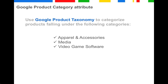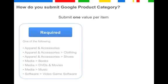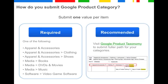The Google product category attribute is a completely new attribute. It contains the category of the product according to Google's product taxonomy. You have to use this attribute to categorize products falling under the categories apparel and accessories, media, and software. You submit only one value per item. For all items falling under the outlined categories, it is required to submit only one of these seven values per each item. These are the very minimum values according to our taxonomy. Recommended, however, is to submit the fuller path of your category, meaning the most granular value according to our taxonomy.